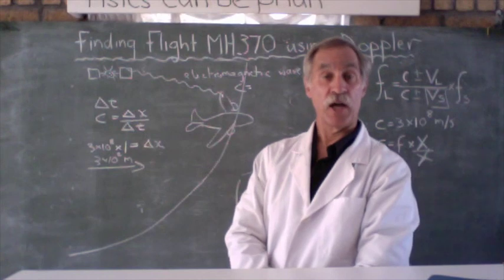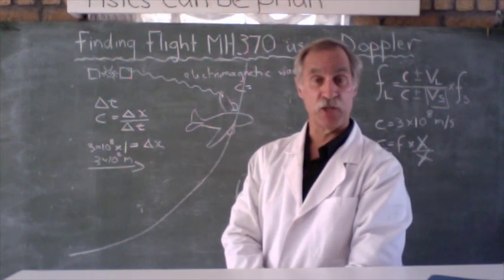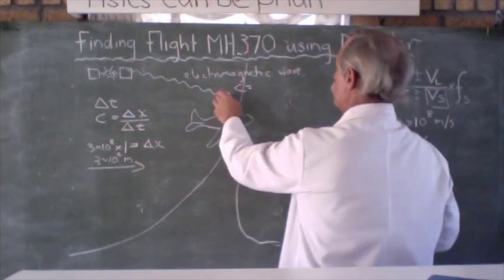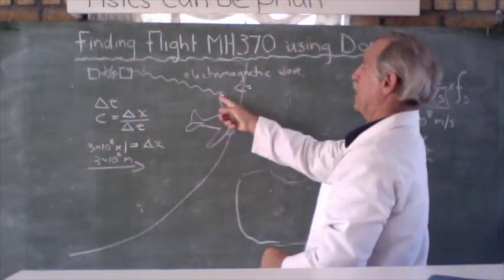They could figure out that this plane was either flying north to China or south to the South Pole. So now they needed another piece of information. Was the plane flying north or south? And apparently this satellite is sitting on the equator. So how does the Doppler effect work? Let me briefly explain how Doppler works.